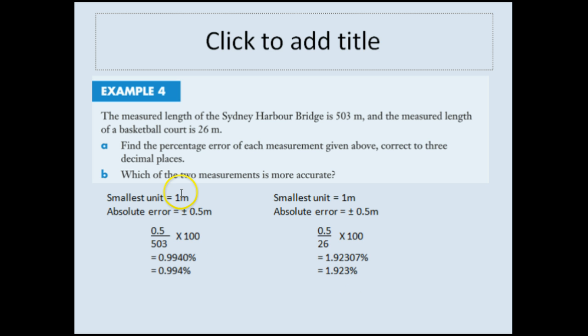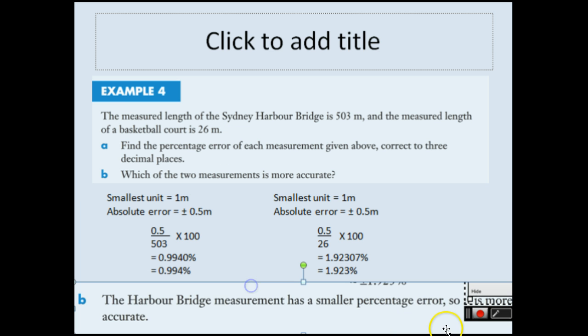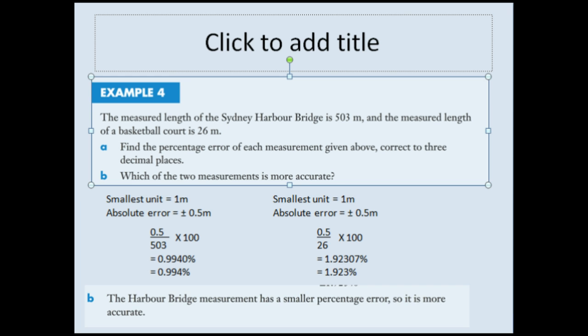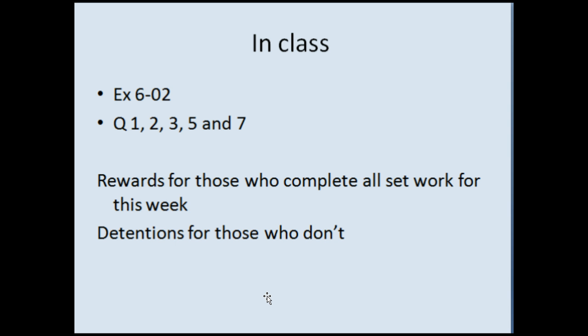Now we can see that even though we have the same smallest unit, when we're measuring here, we'd only make just under 1% error, whereas here we're making nearly a 2% error. So therefore, I would say that the Sydney Harbour Bridge measurement has a smaller percentage error. So therefore, it is more correct or accurate. When you're writing these, make sure that you write complete sentences. And this is the answer that I'd be expecting for question B. That concludes today's lesson.